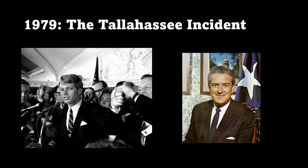Then, in 1979, disaster strikes. While on a visit to Tallahassee, Robert Kennedy is fatally shot by a member of the Black Panther movement. He is put into a coma and is unable to perform his duties as president, so Vice President Connolly assumes office.